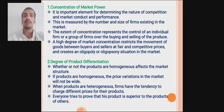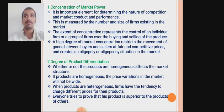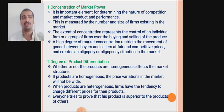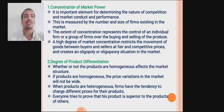The first component is concentration of market power. In every market there is operation of market power, which is an important element for determining the nature of competition and market conduct and performance. Market power is measured by the number and size of firms existing in the market. The extent of concentration represents the control of an individual firm or group of firms over the buying and selling in the market. For example, oligopoly is a market where only a few sellers are present.